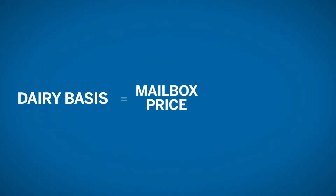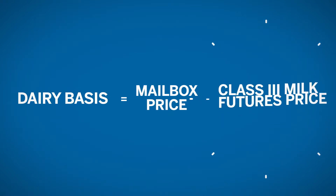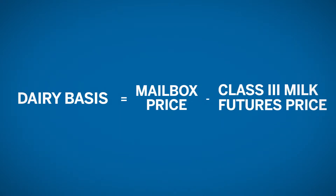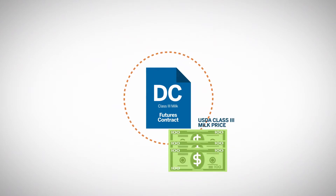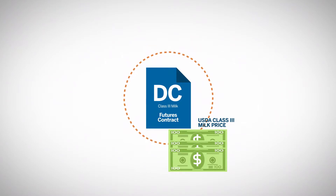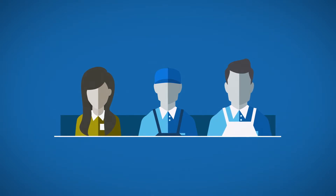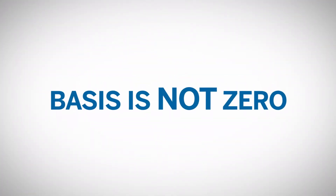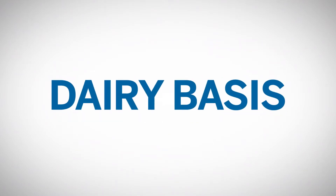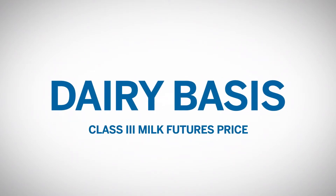The dairy basis is the difference between the producer's mailbox price and the Class 3 milk futures price. Producers typically sell more than one class of milk — classes 1, 2, 3, and 4 — so for the sake of simplicity, the Class 3 milk futures price is used to calculate the basis. Class 3 milk futures are cash settled to the value of the USDA's announced Class 3 price each month. In a perfect world there would be no dairy basis; however, since dairy producers sell a blend of milk reflected in their mailbox price, the basis is typically not zero. It reflects the correlation of the producer's mailbox price to the Class 3 milk futures price.